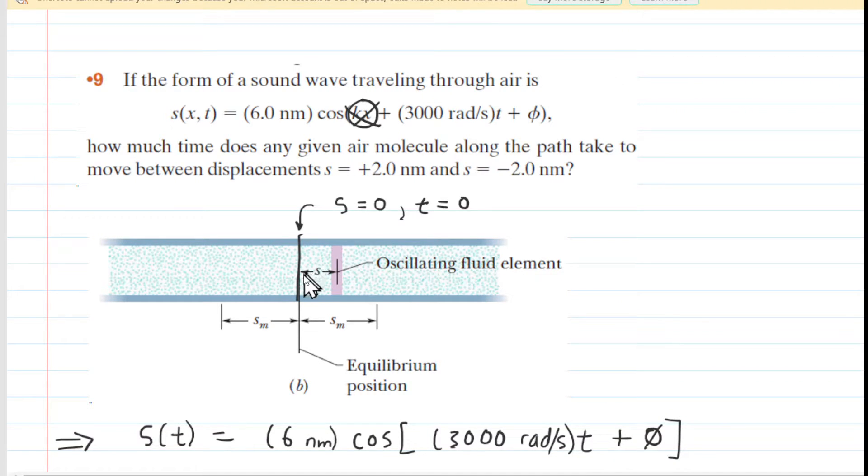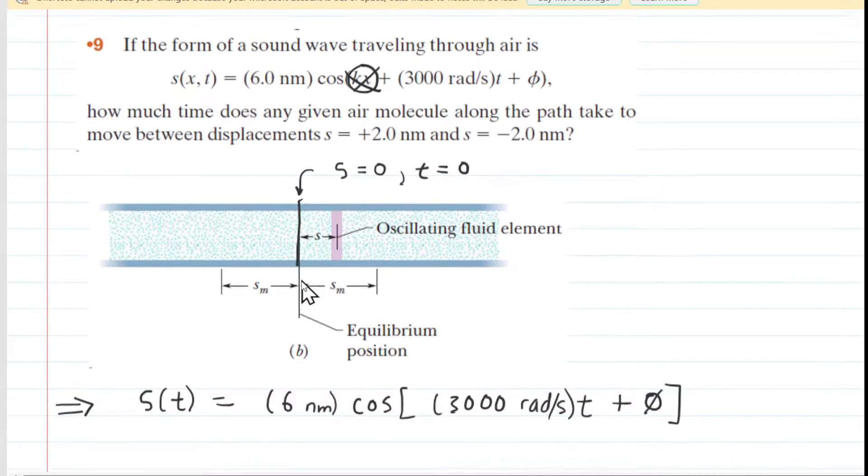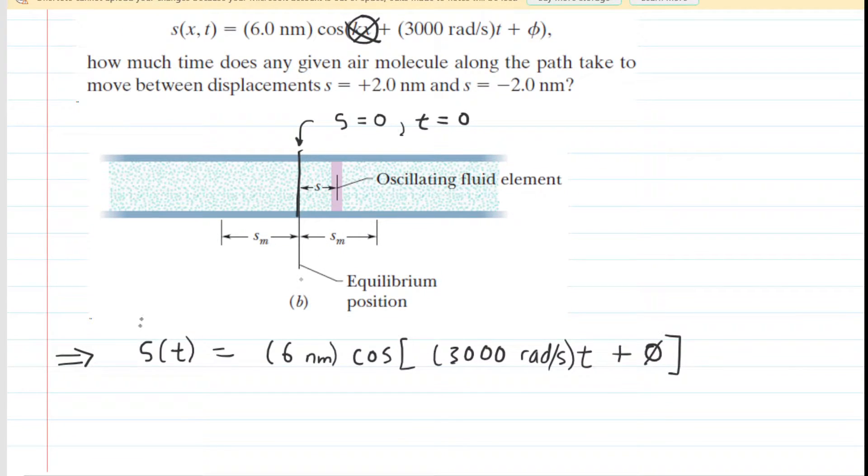So if time is equal to 0, the air molecule's position is equal to 0, and we're going to fill those values into our equation so that we can find the phase angle. So this s(t), this position here, is going to equal 0, and then the time right there is also going to equal 0.